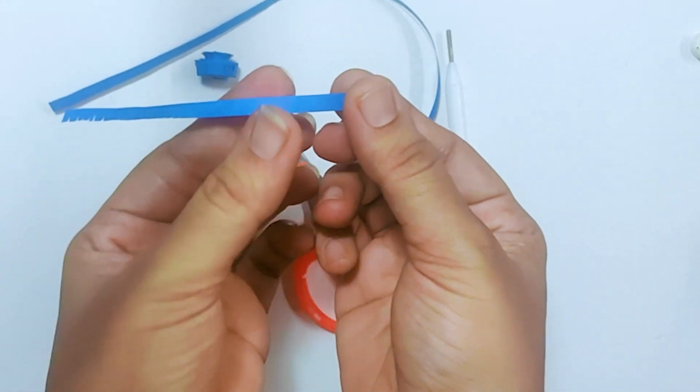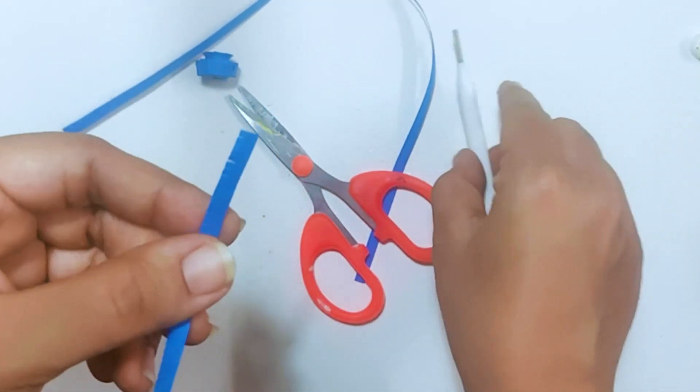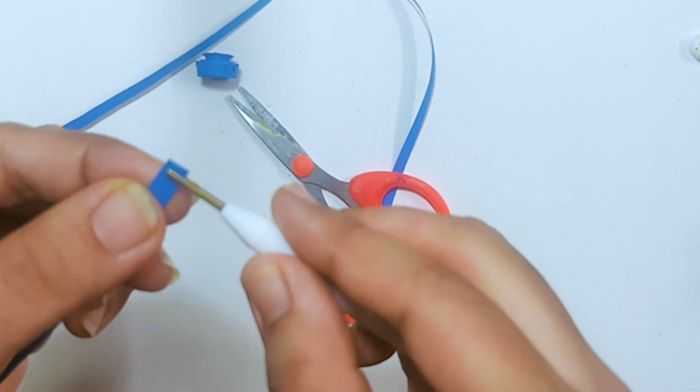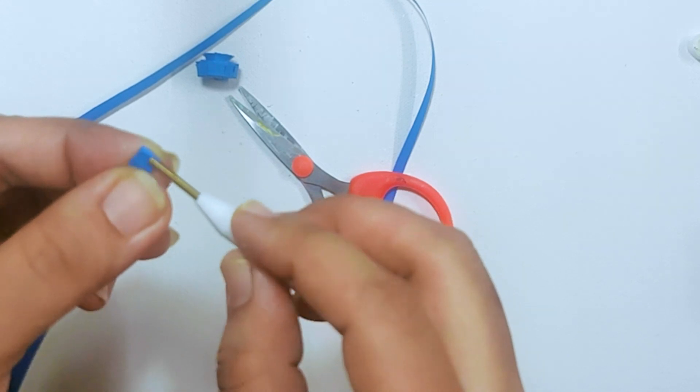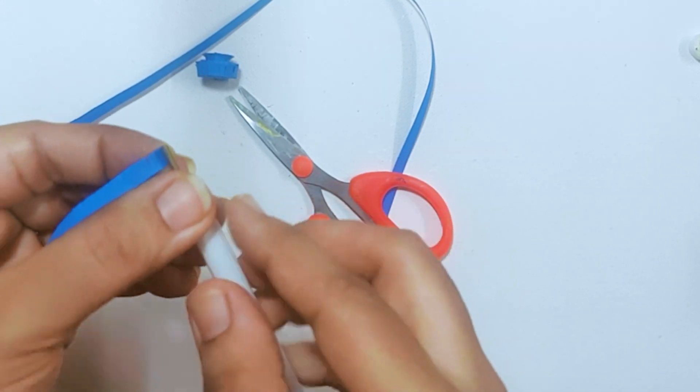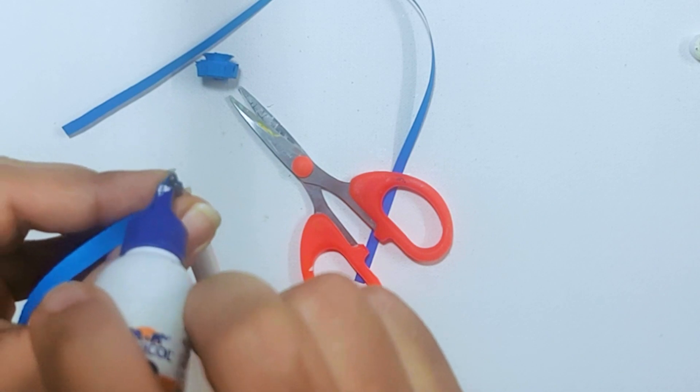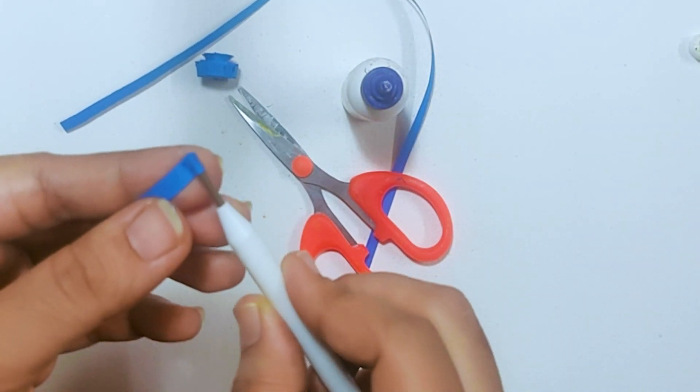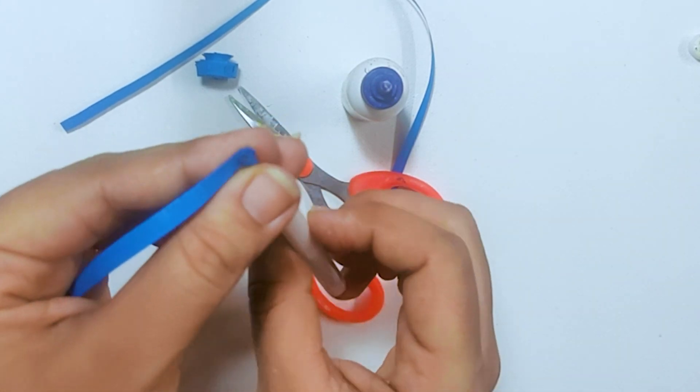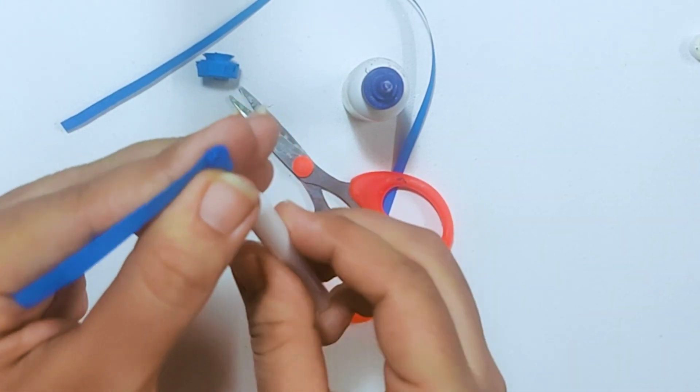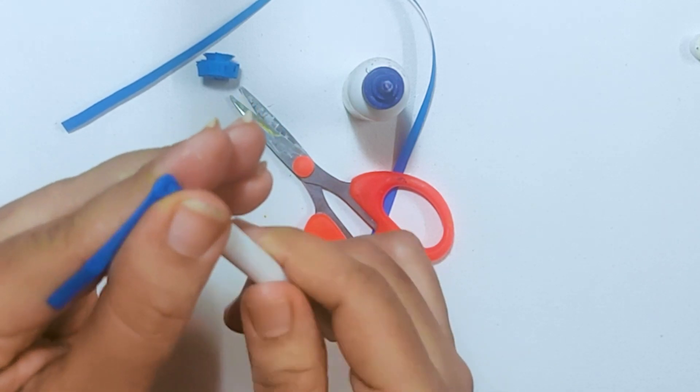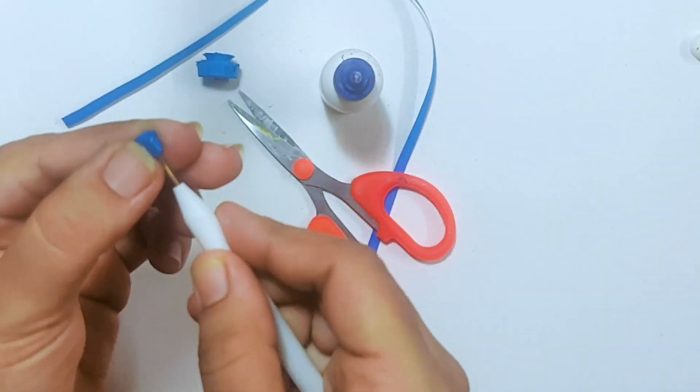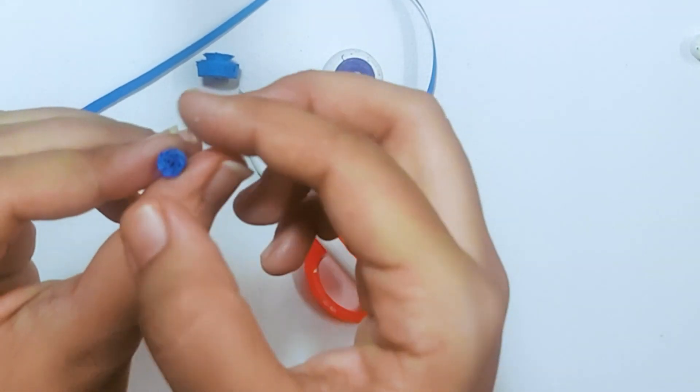Once you do this, take your quilling tool, slide it in the slit, and secure it with some glue. Start rolling it and tighten it between your thumb and your index finger. Then take it out.